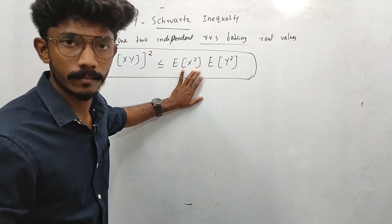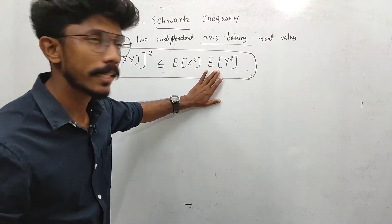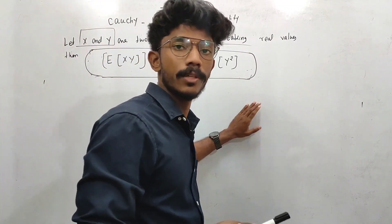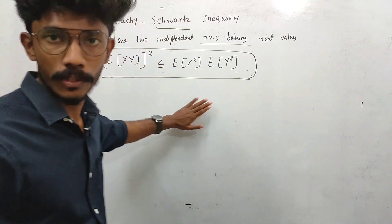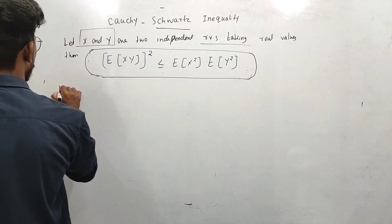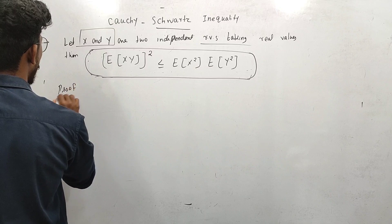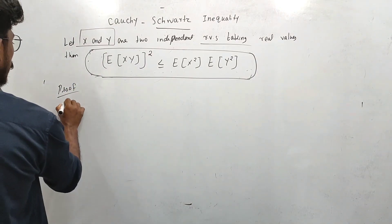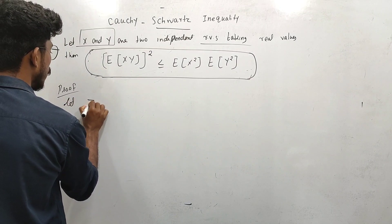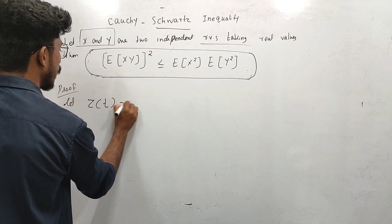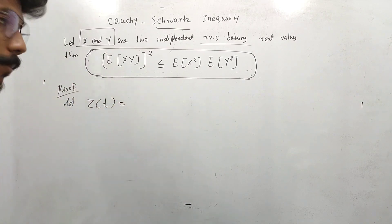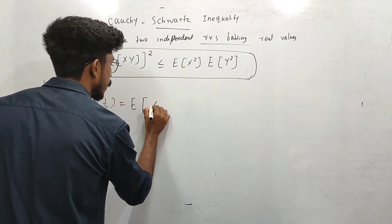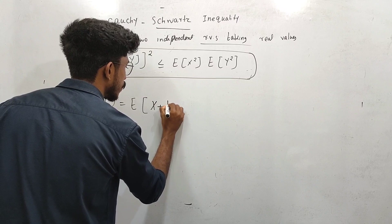This is the proof. We will try to prove it. This proof will be shown in the exam. Cauchy-Schwarz: statement and proof. Let us define a function. Z of t is nothing but expectation of X plus t into Y, the whole square.